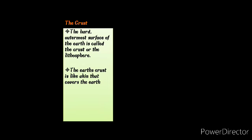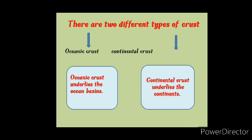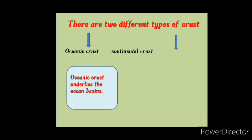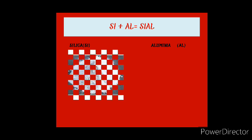The crust, also known as lithosphere, is the hard outermost surface of the earth. The earth's crust is like skin that covers the earth. There are two different types of crust: oceanic crust and continental crust. Oceanic crust underlies the ocean basin, continental crust underlies the continent. Continental crust is about 35 kilometers thick.